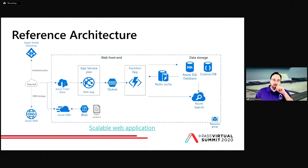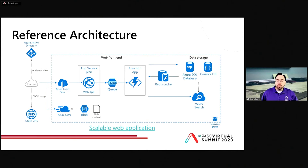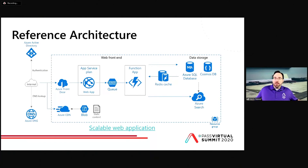Our reference architecture for this is a scalable web application — an Azure case. At the bottom, there is an Azure Content Delivery Network hosted from blob storage for static data: all those images and things that don't change frequently. The Azure CDN pushes it out and caches it on servers around the world — you can also use Cloudflare, CloudFront, or whatever CDN you'd like — making files close in geographic proximity to your users regardless of where in the world they are. On the back side, we have Redis caching for quick lookups, and Azure SQL Database or Cosmos DB for real data storage.